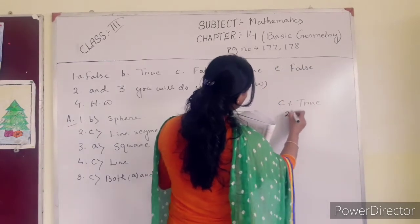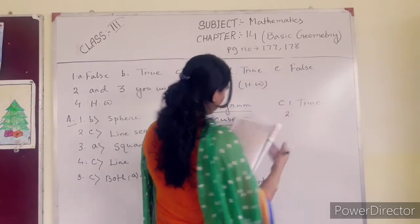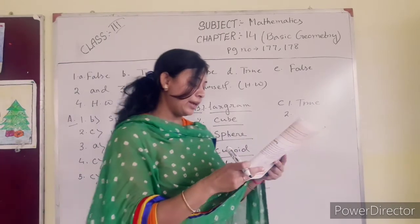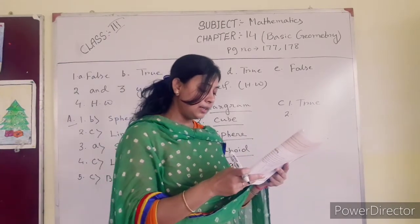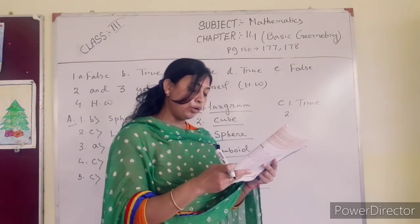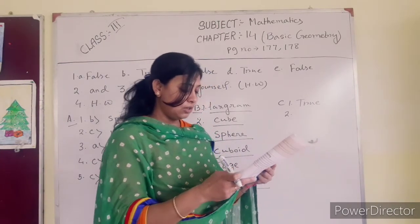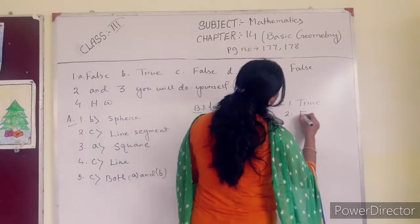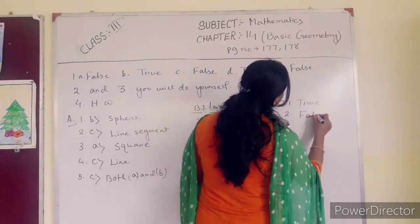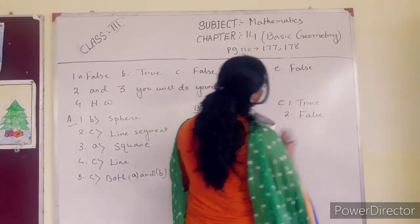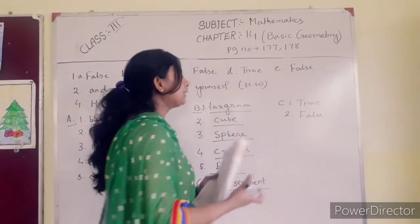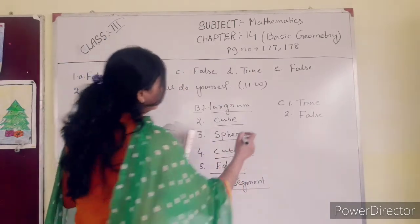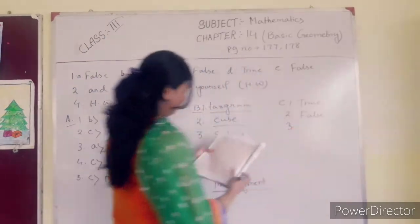Number 2: 'A line has two end points and has a definite length in both directions.' No, this one is false, because you can extend a line in both directions infinitely — so this one is false.